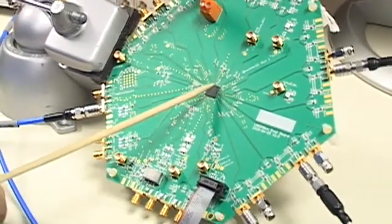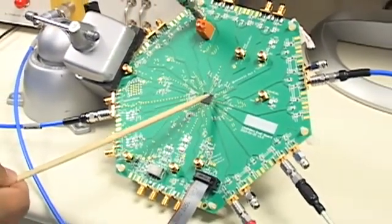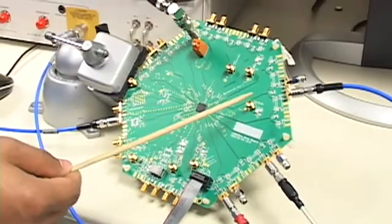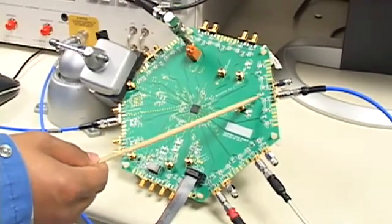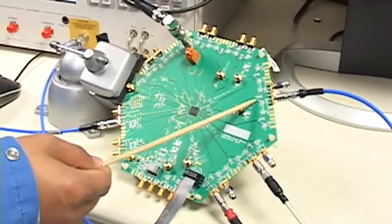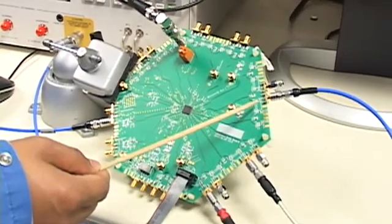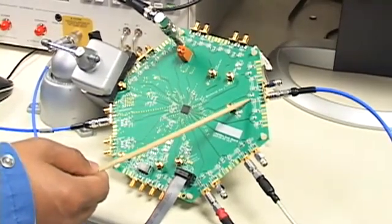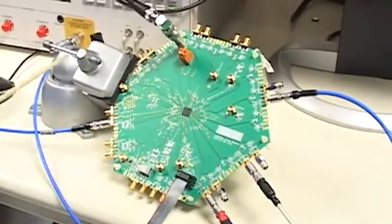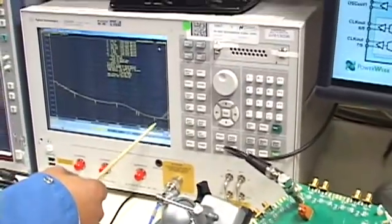That VCO clock is then fed to the clock distribution path, and we're outputting multiple clocks on this board. The first clock, we're dividing that frequency down to output a 122.88 MHz LVPECL output. That's being fed to this E5052 phase noise analyzer,